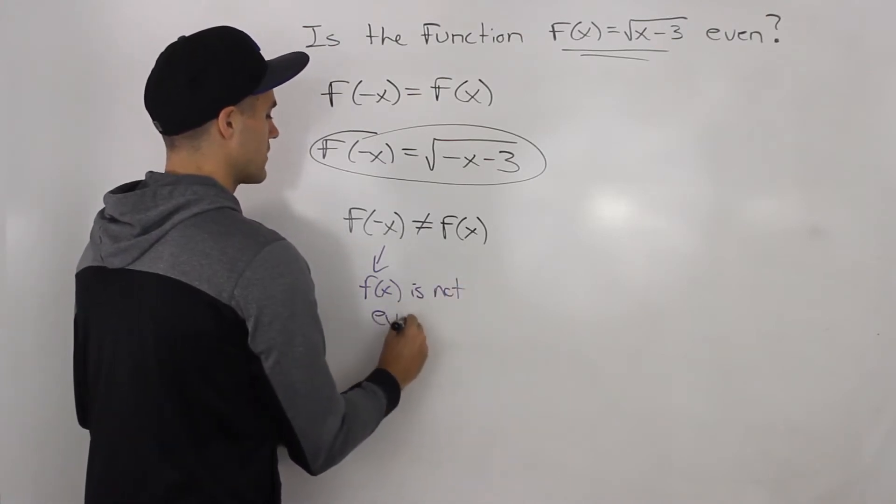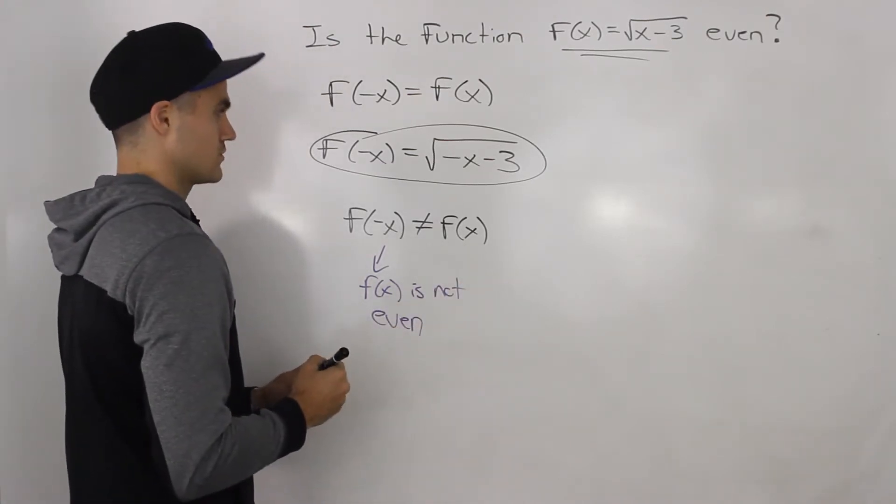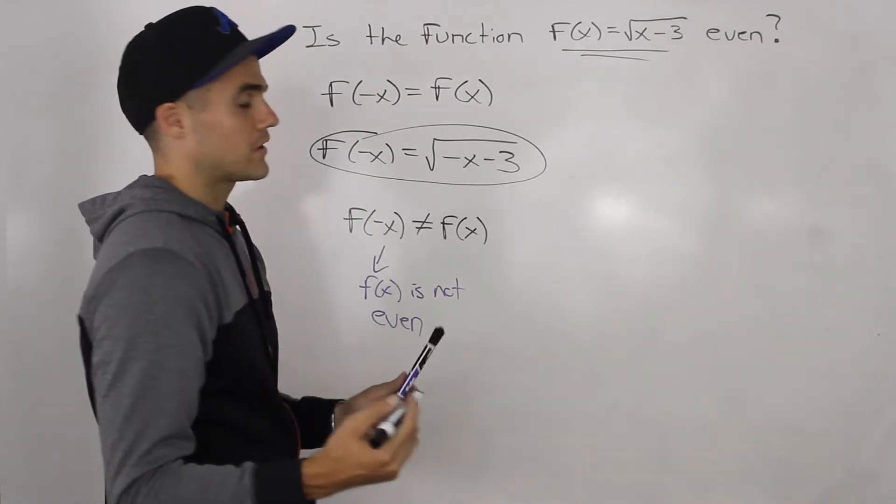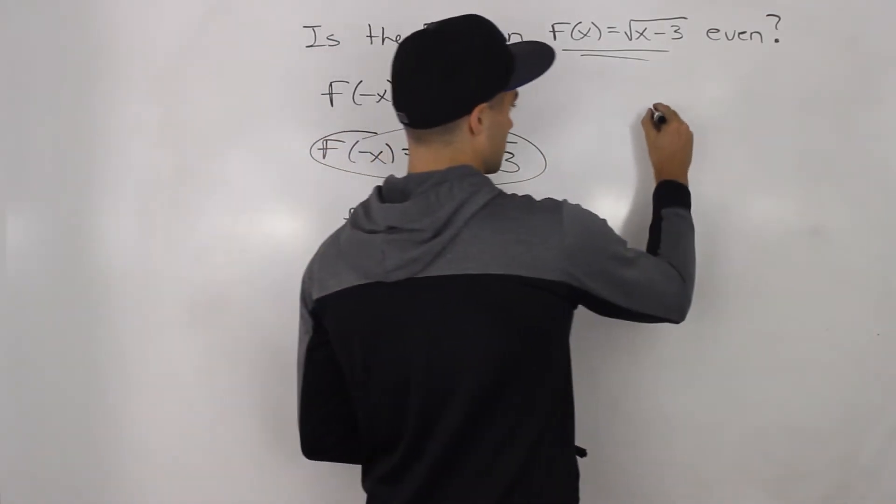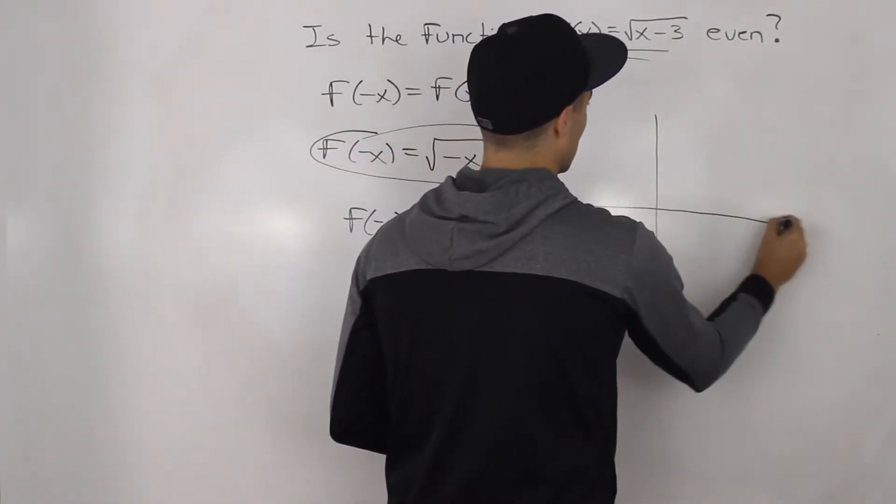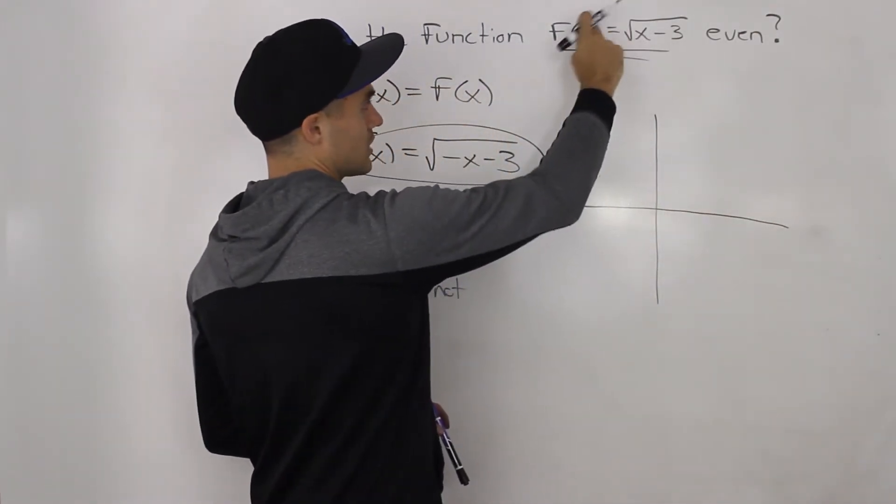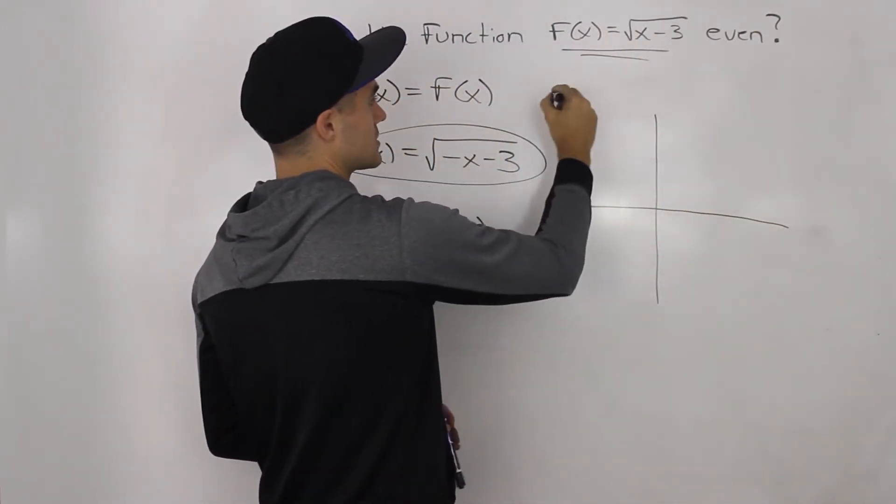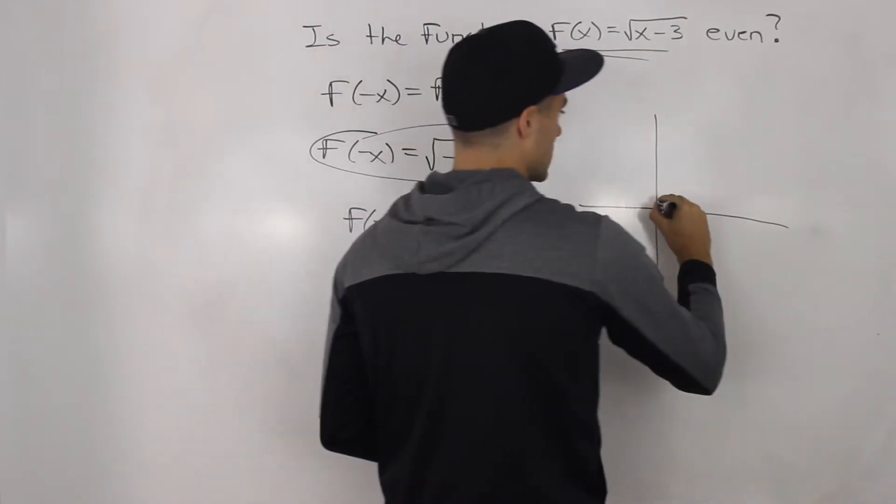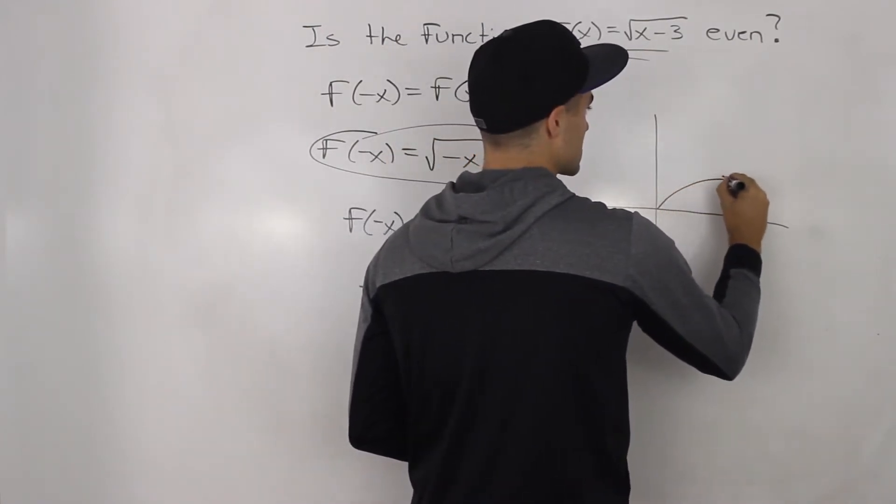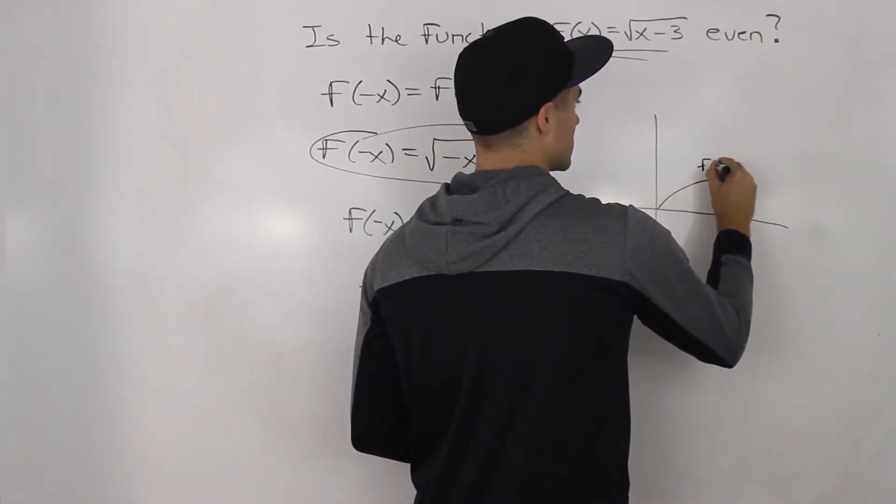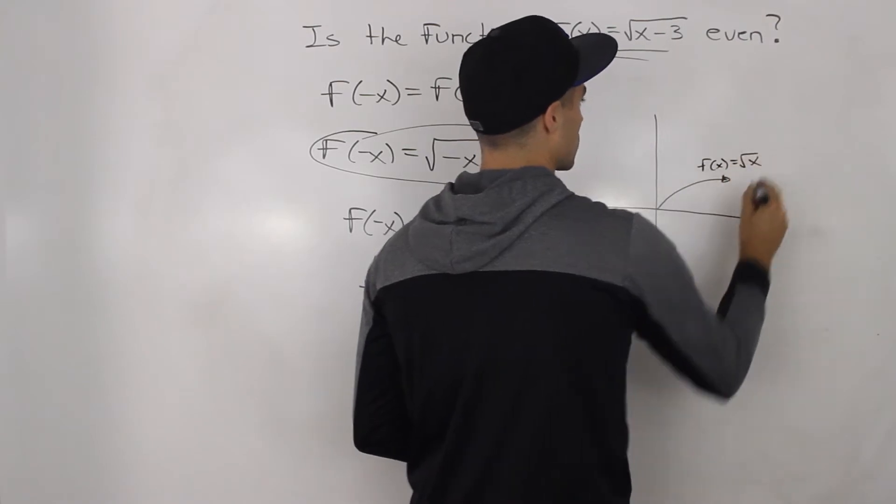So that's one way to describe it. Another way we can do it is we can graph this. It's a pretty simple graph. We know that the parent function of this transform function is going to be the square root of x, which looks like this. So this is f of x equals the square root of x.